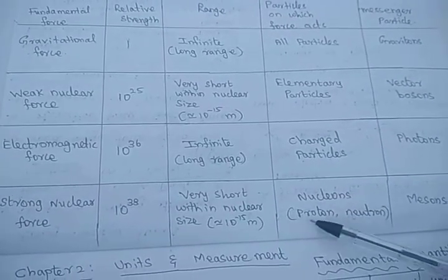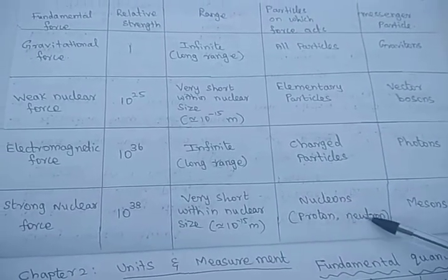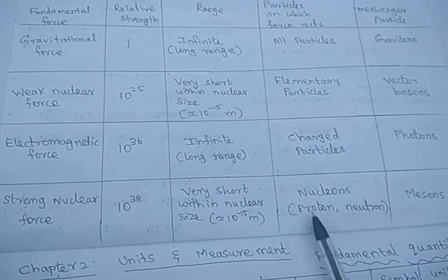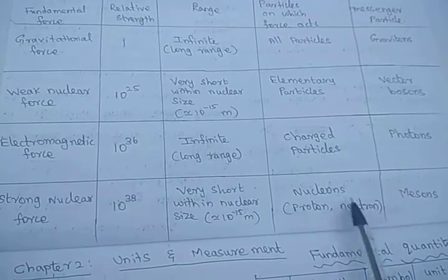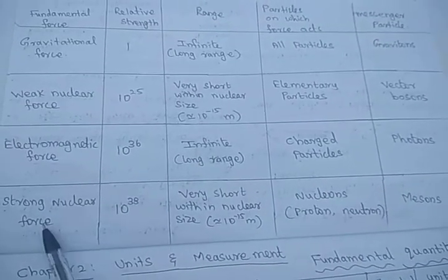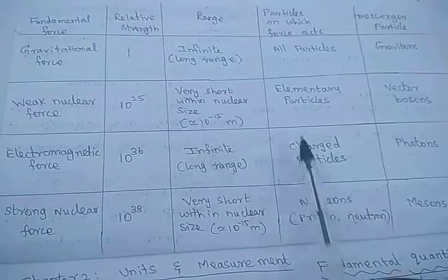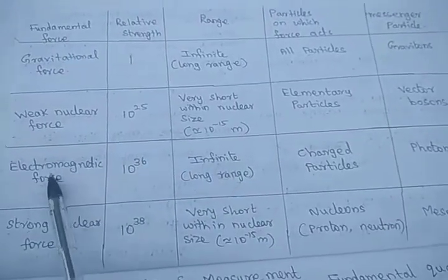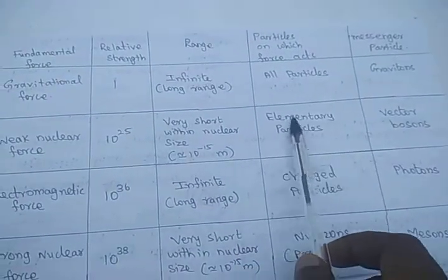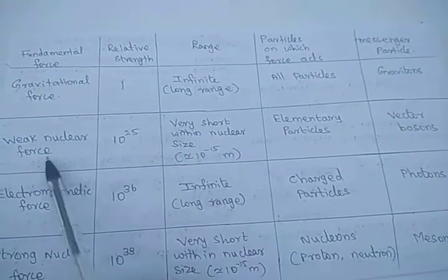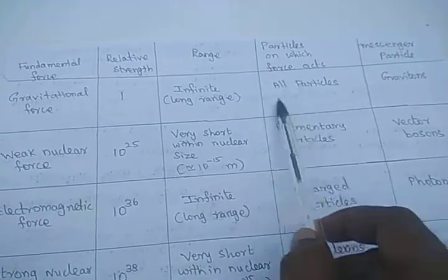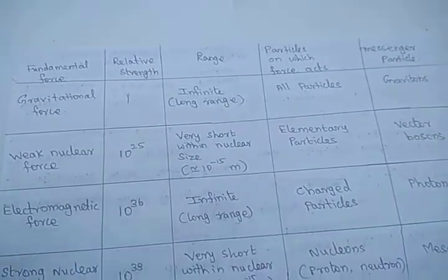Nucleons means protons and neutrons. Simply put: interactions inside the nucleus between protons and neutrons involve the strong nuclear force; charged particles involve electromagnetic force; elementary particles involve the weak nuclear force; and all particles experience gravitational force.